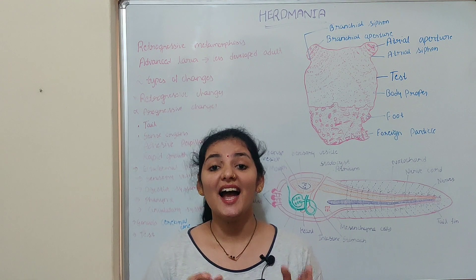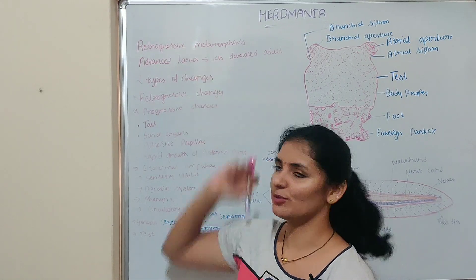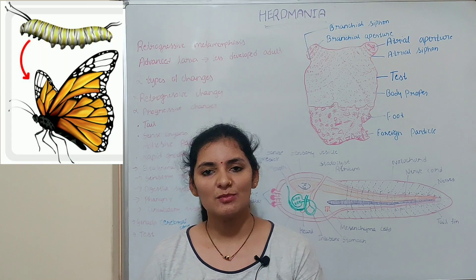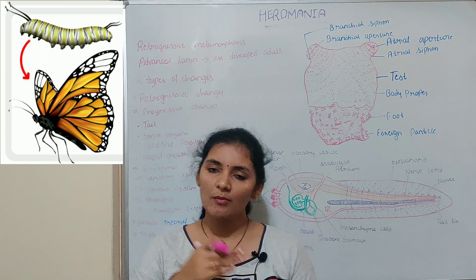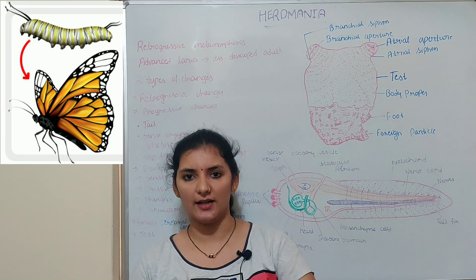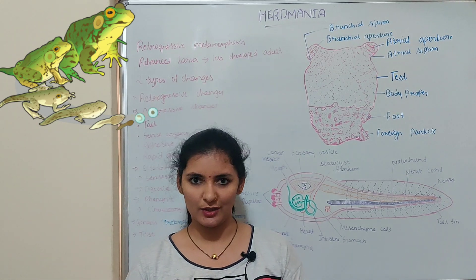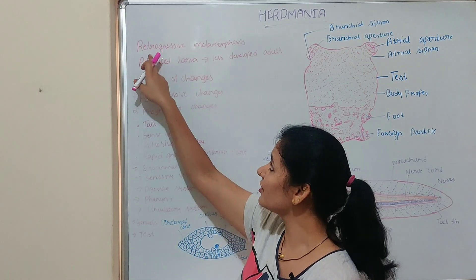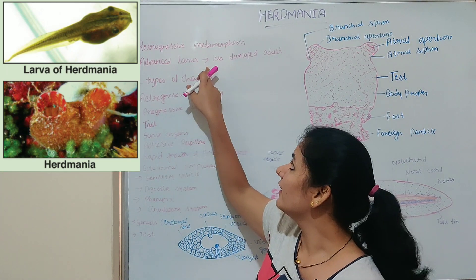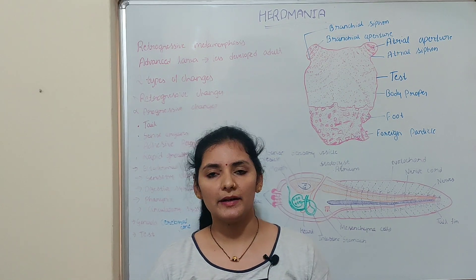Welcome back to my channel. As a continuation of Herdmania, in this video I'm going to talk about retrogressive metamorphosis. It is a type of metamorphosis. Metamorphosis is a change in the structure of the body from larval form to adult form. Usually, less developed larvae develop into an advanced adult individual, but the reverse happens in the case of retrogressive metamorphosis — an advanced larva develops into a less developed adult individual.